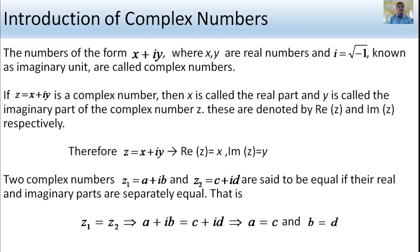First, the Introduction of Complex Numbers. Numbers of the form x plus iy, where x and y are real numbers and i equals the square root of minus 1, known as the imaginary root, are called complex numbers. If z equals x plus iy is a complex number, then x is called the real part and y is called the imaginary part, denoted by Re(z) and Im(z) respectively.